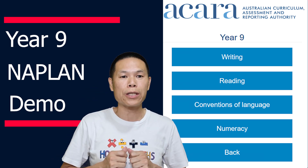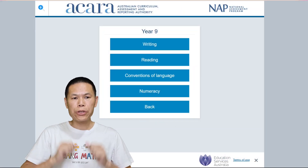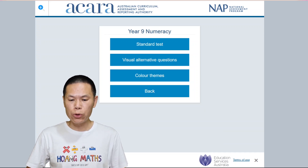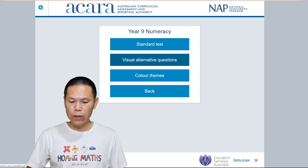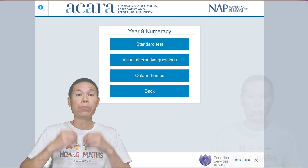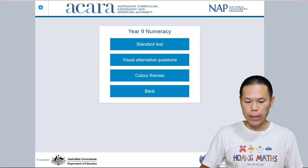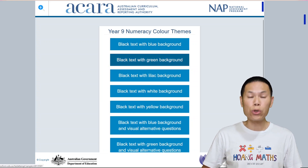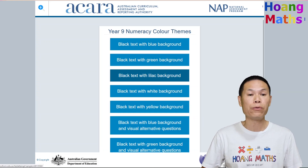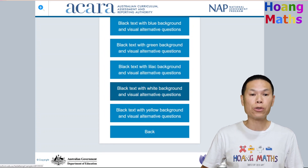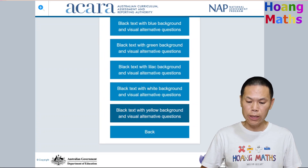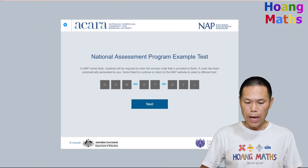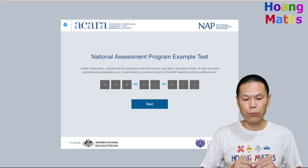Today we just go through numeracy, so we click on numeracy. For most of us we choose standard test. If you click any of the other options that's just to improve your visual display, and if you click on color themes you can choose options to help improve your reading. For most of us we just click on standard.